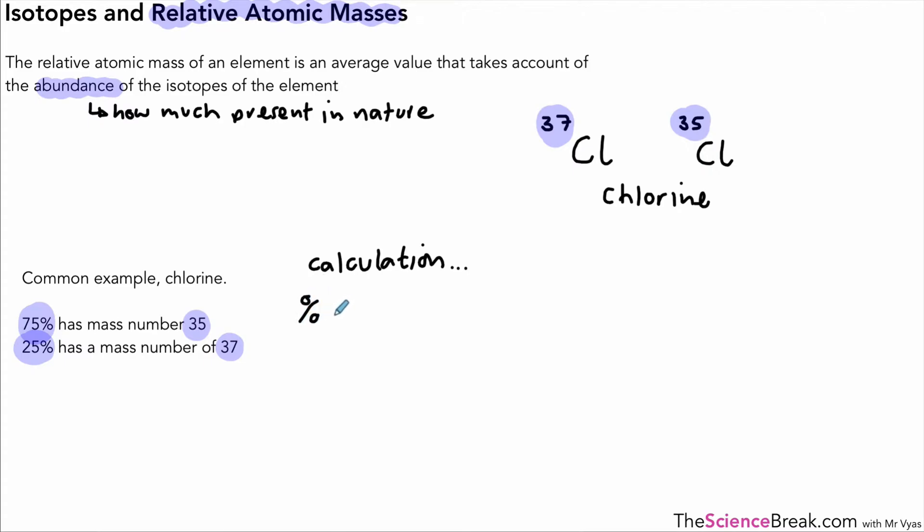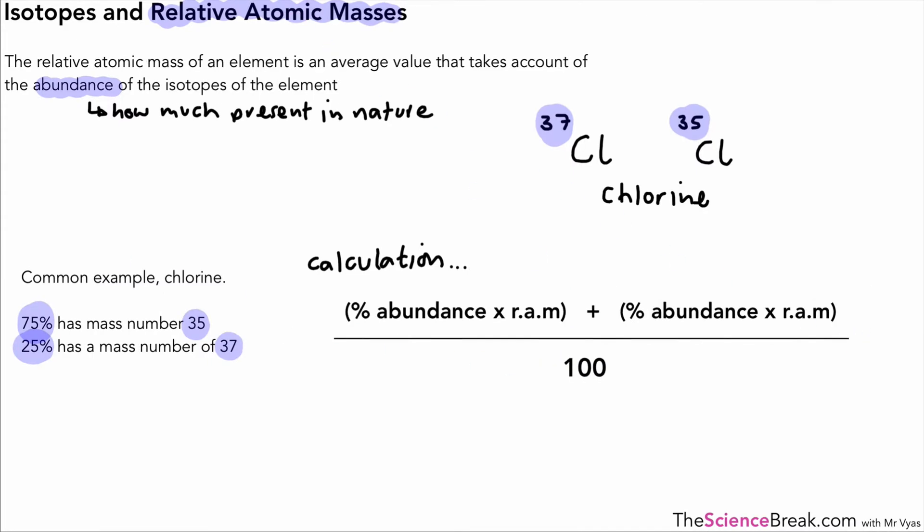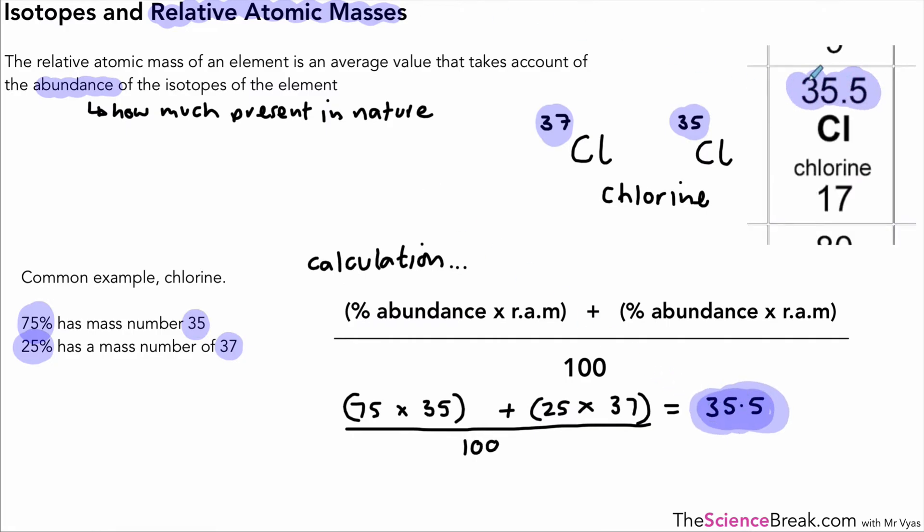We can do a calculation. We multiply the percent abundance of one isotope by its relative atomic mass, then add the percent abundance of the other isotope multiplied by its relative atomic mass. We add those numbers together and divide by 100. This gives us the relative atomic mass. For chlorine, we do (75 × 35) + (25 × 37), divide by 100, and get 35.5—which is what you'll see on the periodic table.